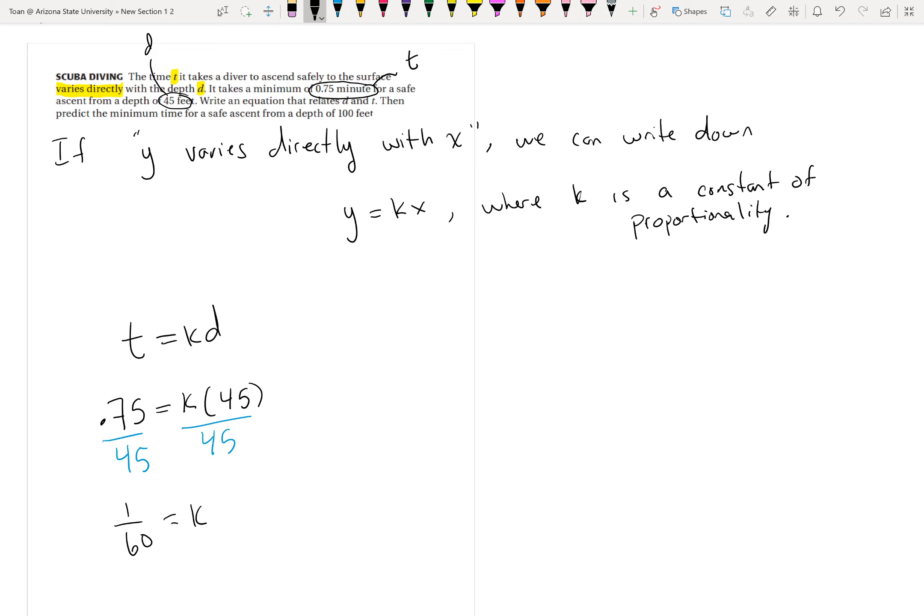The moment you solve for k, you can write what I call as a complete equation. You're going to take this constant proportionality and plug it back into your stencil, your format, your blueprint equation. So what is my complete equation? It's going to be t equals, instead of k, I'm going to write 1 over 60, d. When you have a complete equation, you can go ahead and then answer any questions that they ask you.